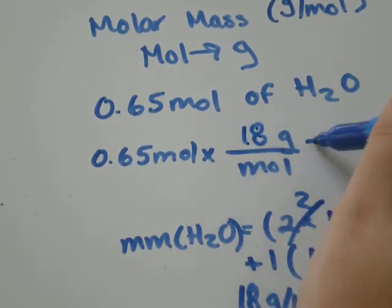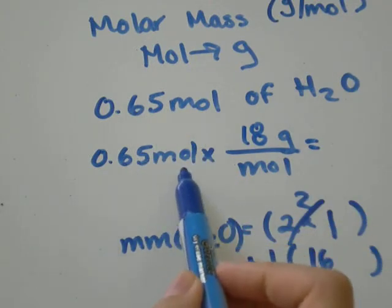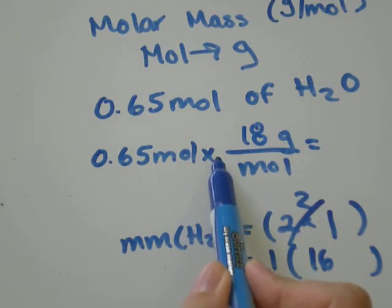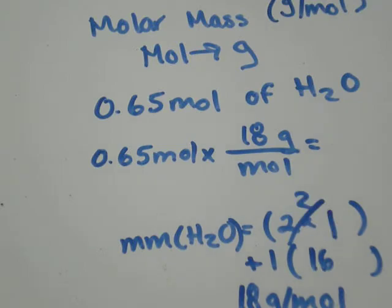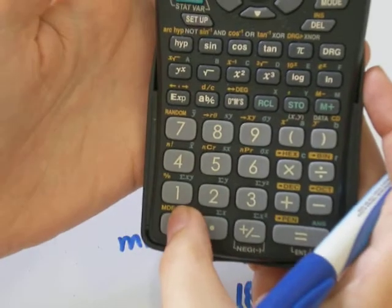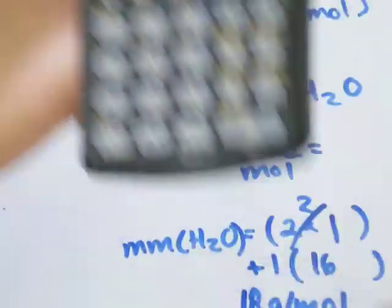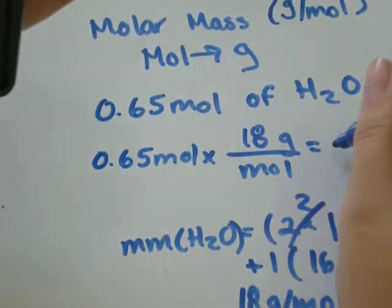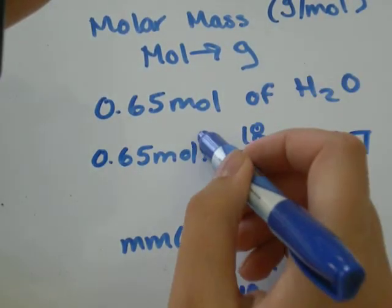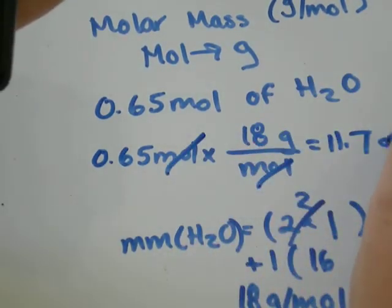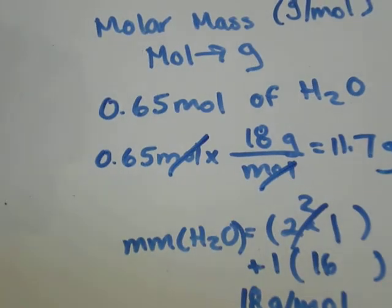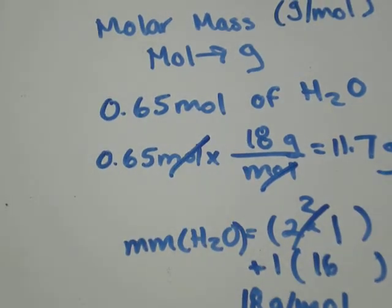So let's go back up here and put in 18 grams per mole of water. So 0.65 moles of water at 18 grams per mole in mass. I'll just go 0.65 times 18 equals 11.7. My moles would have cancelled out, and I'd be left with just grams. So 0.65 moles of water has 11.7 grams of weight in it.